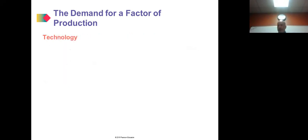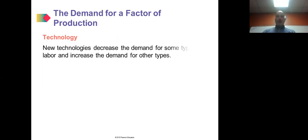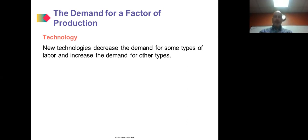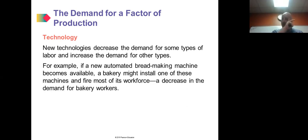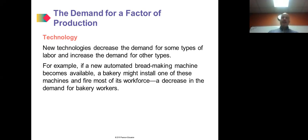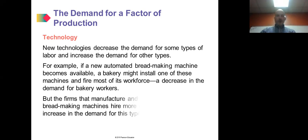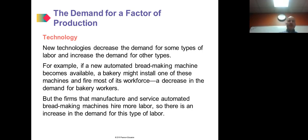As new technologies are introduced, they decrease the demand for some types of labor but also increase the demand for other types. For example, if an automated bread-making machine becomes available, a bakery might install one and fire most of its workforce — a decrease in demand for bakery workers. But the firms that manufacture and service those machines will hire more labor, creating an increase in demand for that type of labor.